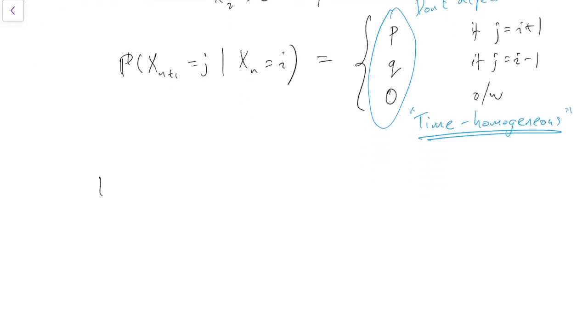Worth noting that, of course, because p, i, j is a probability, it must be greater than or equal to 0. Also, once we're at i, we have to go somewhere.